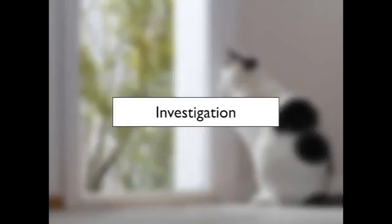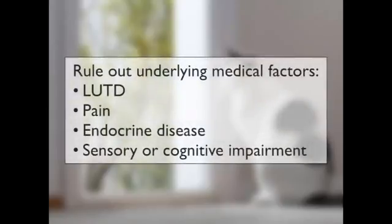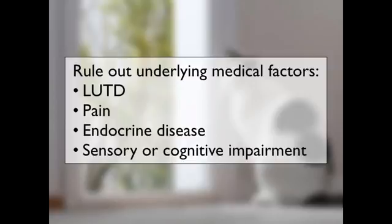The first thing is how do we investigate these problems. Initially we need to rule out a number of underlying medical factors that could be important: lower urinary tract disease, pain, endocrine disease — particularly thyroid dysfunction — and sensory or cognitive impairment. Any of these can alter motivation in cats, increase competition for resources or increase stress, and they are particularly relevant in multi-cat households where they're likely to lead to increased conflict between the resident cats.